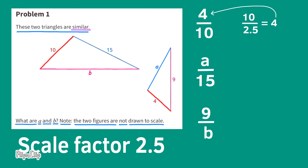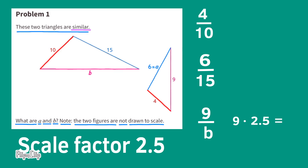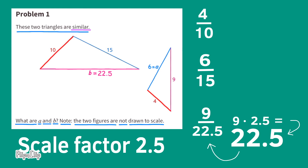We can use this same strategy to find A. 15 divided by 2 and a half equals A, and 15 divided by 2 and a half equals 6. So the missing length for A is 6 units. 9 times the scale factor 2 and a half equals B, and 9 times 2 and a half equals 22.5, or 22 and a half. The missing side length for B is 22 and a half.